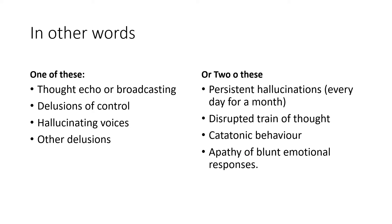Breaking that down: from the left column we need one of — thought echo or broadcasting (feeling your thoughts are broadcast and others can read them), delusions of control, hallucinating voices, or other delusions. From the right column we need two of — persistent hallucinations of other sorts (persistent meaning every day for about four weeks), disrupted train of thought where thoughts jump from place to place, disjointed speech, catatonic behaviour, and blunt emotional responses.